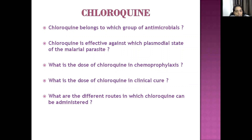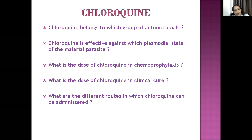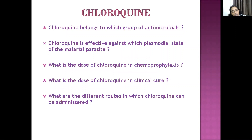For chemoprophylaxis of malaria when visiting an endemic region: take 600 mg as the first dose on the starting day, 300 mg weekly in between, and 600 mg on the last day when leaving. At the end, follow with primaquine 0.5 mg/kg. Remember these doses as they can come as exam questions.